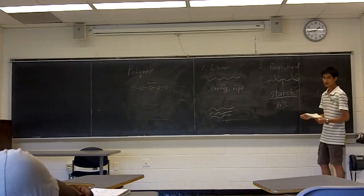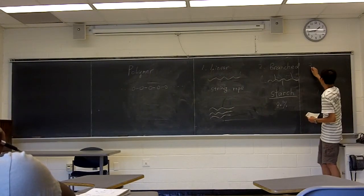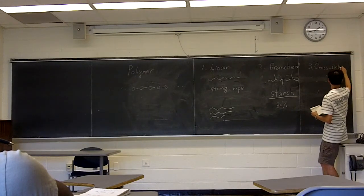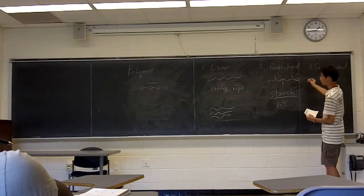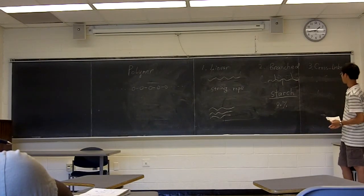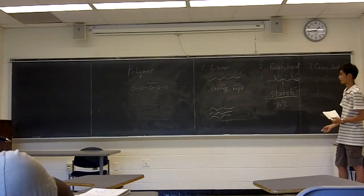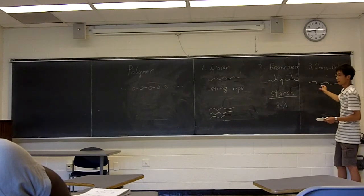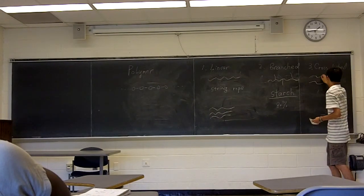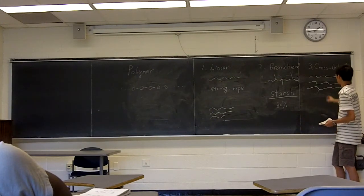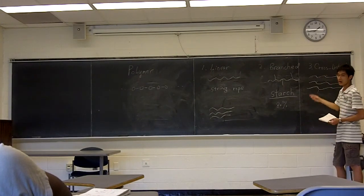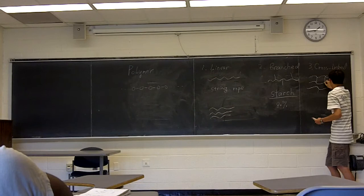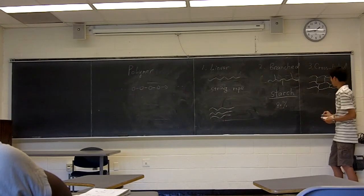And the last one I'm going to introduce is cross-linked polymer. And let's see the structure of cross-linked polymer first. Like linear polymer, it has many linear main chains also. However, these chains can link with each other via chemical bonds. So you can see here, they are linked together.